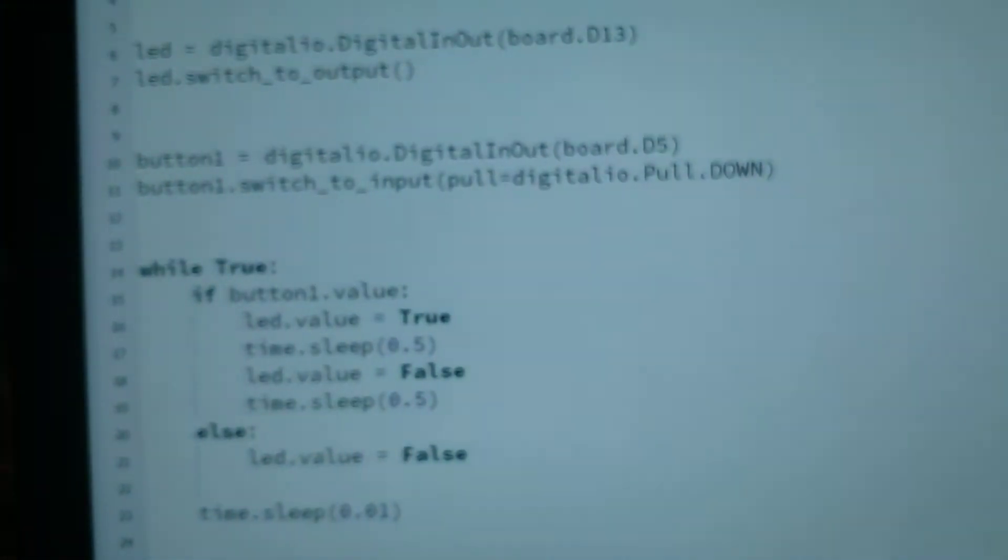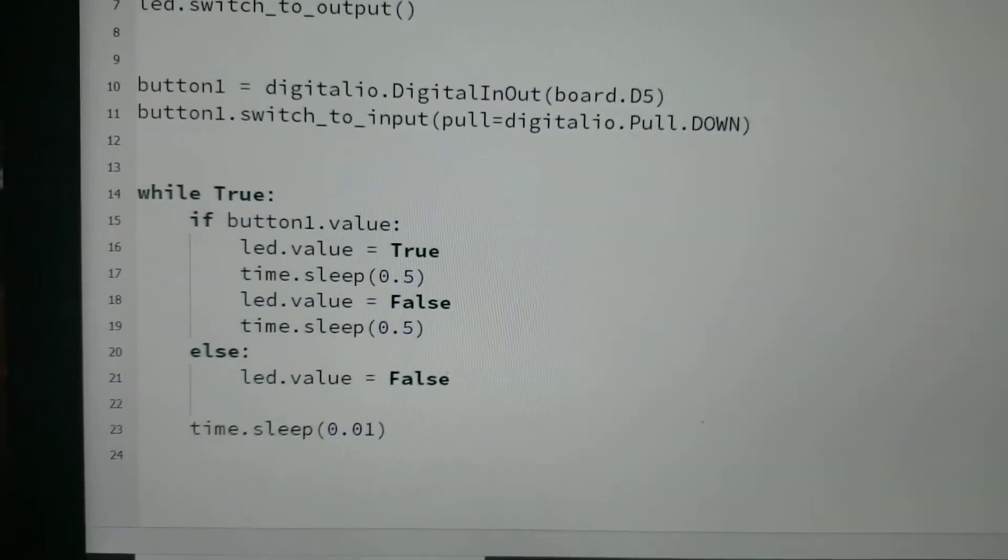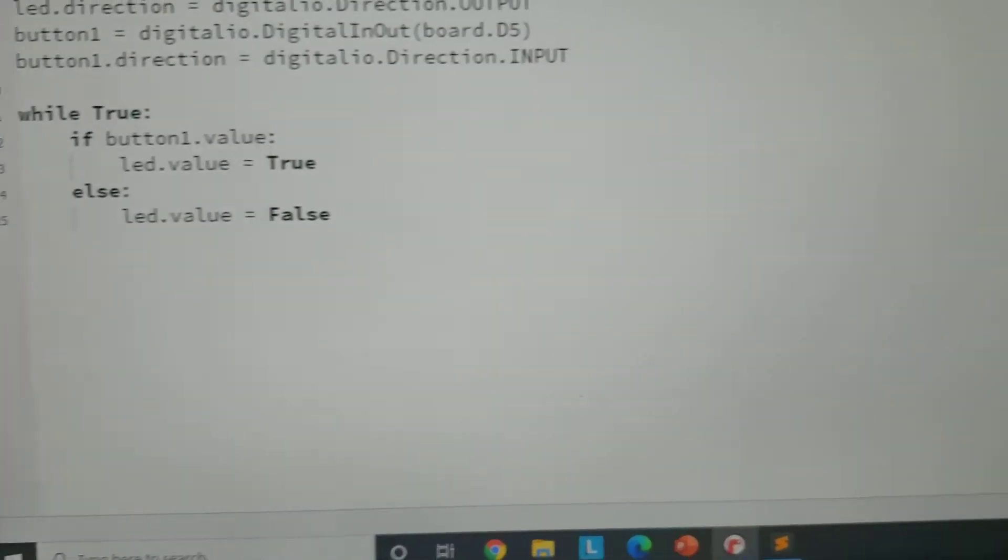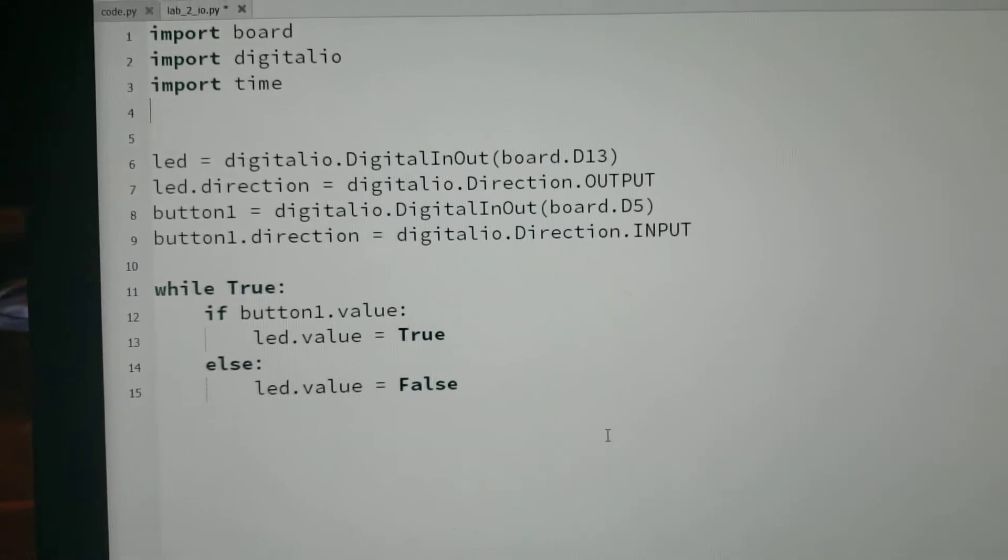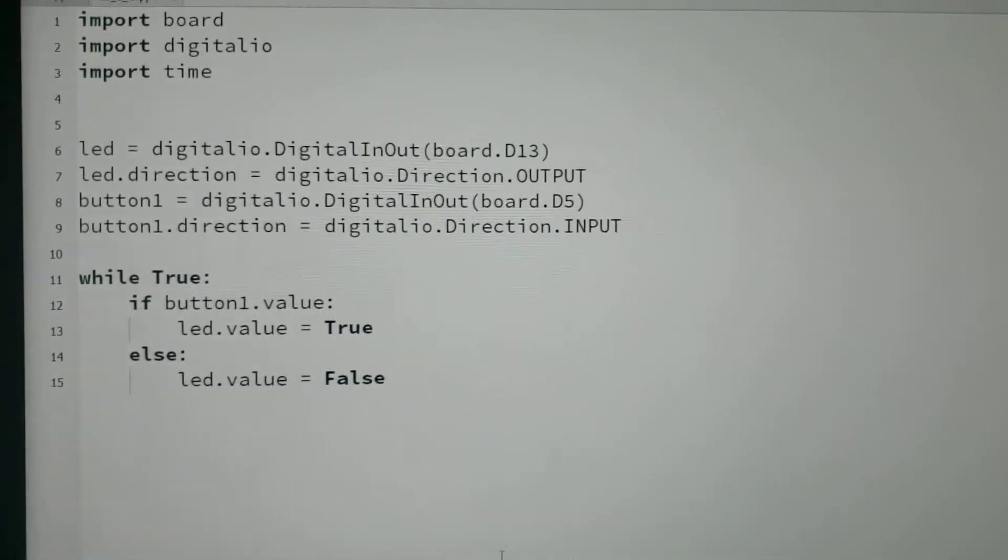Now, why did I use the pull-down resistor? Why didn't I just say it was an input? Well, let's see here. This was what I was originally using, and I had quite a few issues.